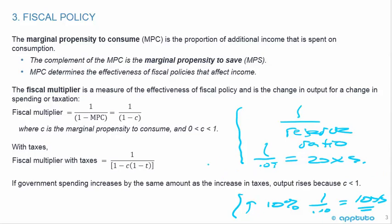Why did I bring that up? Because now we're going to look at the fiscal multiplier. You can see it's also a multiplier — the numerator is the same, the numerator is 1. But the denominator is 1 minus the marginal propensity to consume, or 1 minus C, 1 minus consumption.